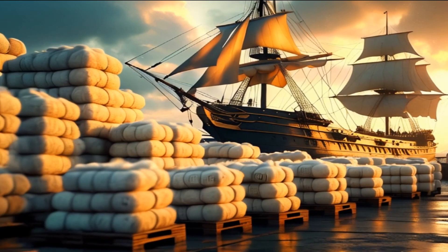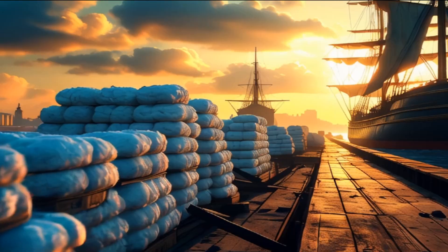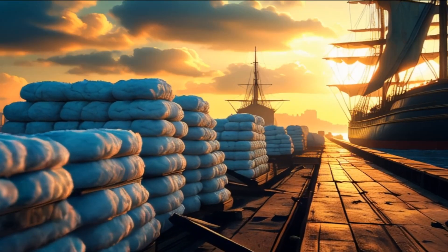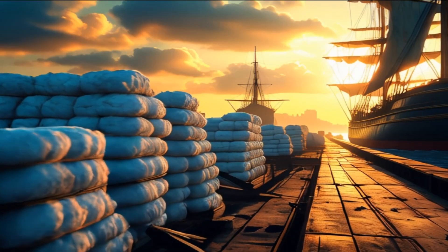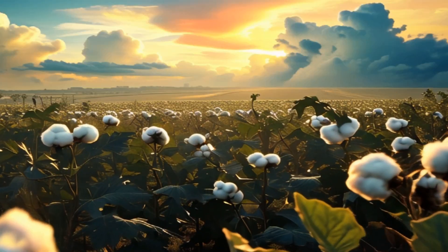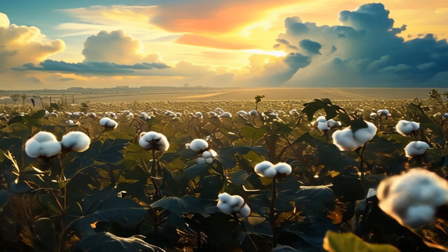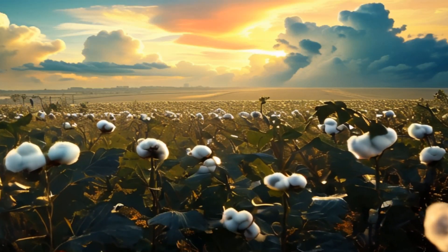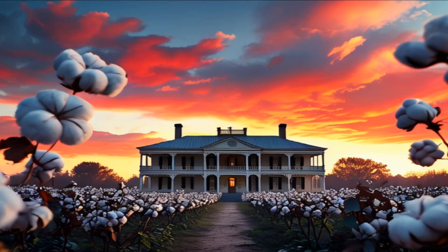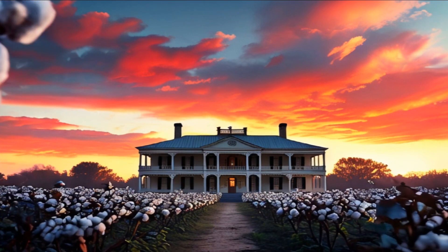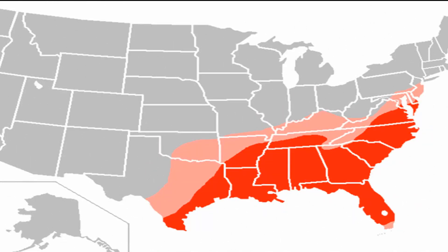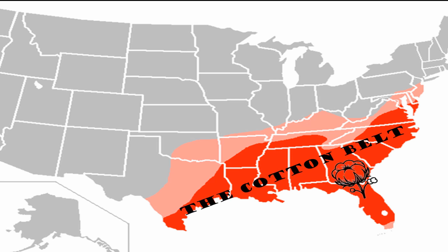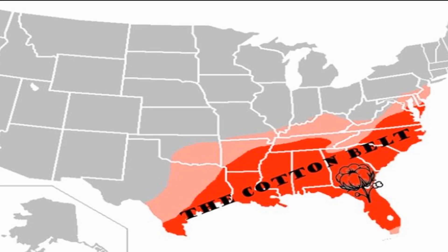The high demand for cotton led to the rapid expansion of plantations across the southern states, particularly what was referred to as the cotton belt, which included Georgia, Alabama, Mississippi, Louisiana, and Texas.